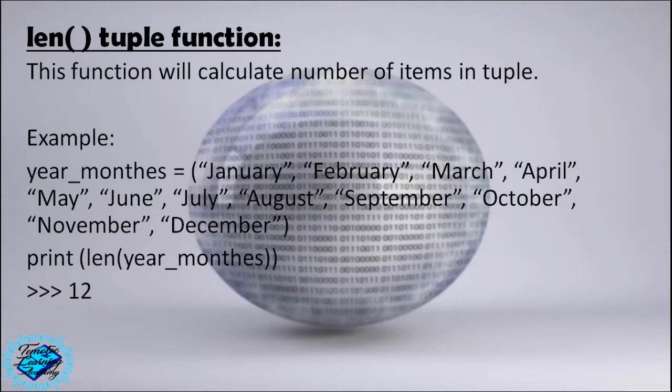len function of tuple — len tuple function. This function will calculate the number of items in a tuple. Example: year_months equals January through December. Print(len(year_months)) — we will get 12. The length of year_months tuple is 12 items.